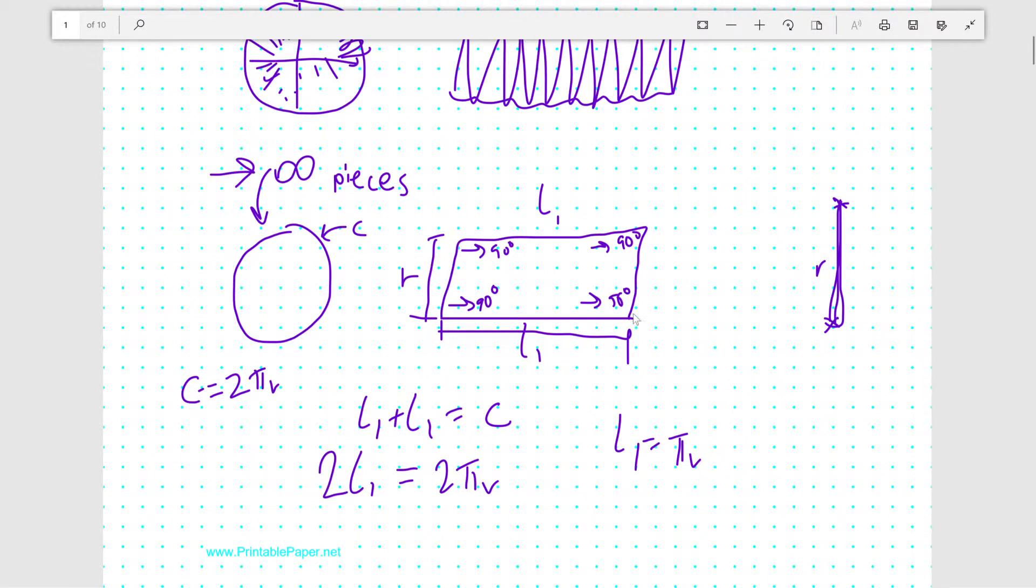If you want to take the area of the rectangle, which will be equal to the area of the circle, you'll get A is r times pi r, which is equal to pi r squared.